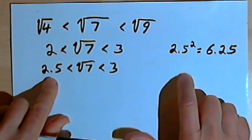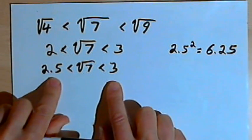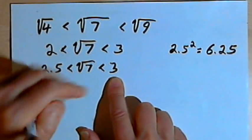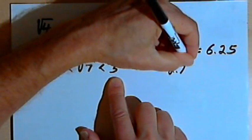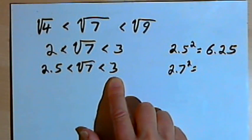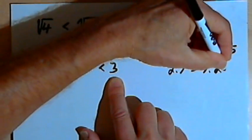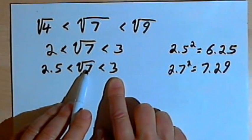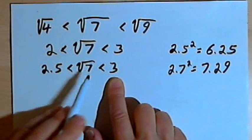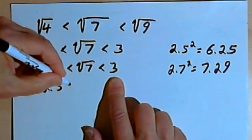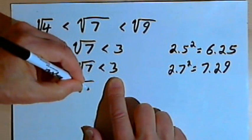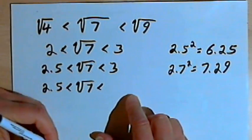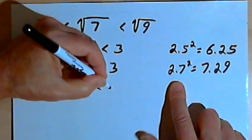I'm going to repeat the process. I'm looking for a number between 2.5 and 3, so I'll try 2.7. I'll take 2.7 and square it — 2.7 squared is 7.29. Since 7.29 is greater than 7, I can write: 2.5 < square root of 7 < 2.7.